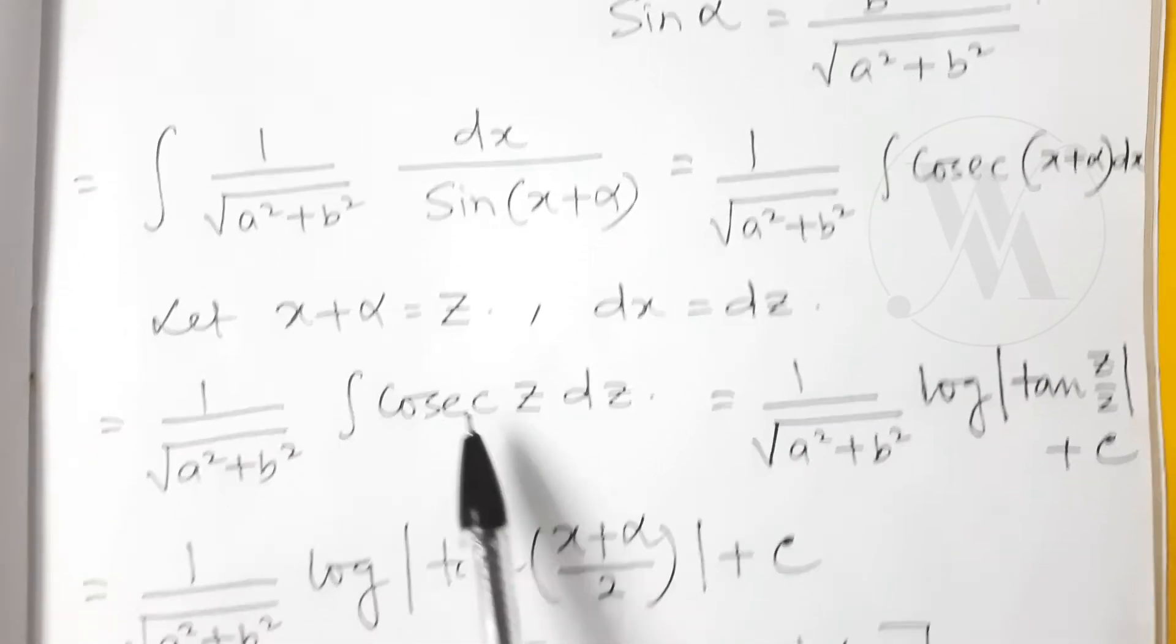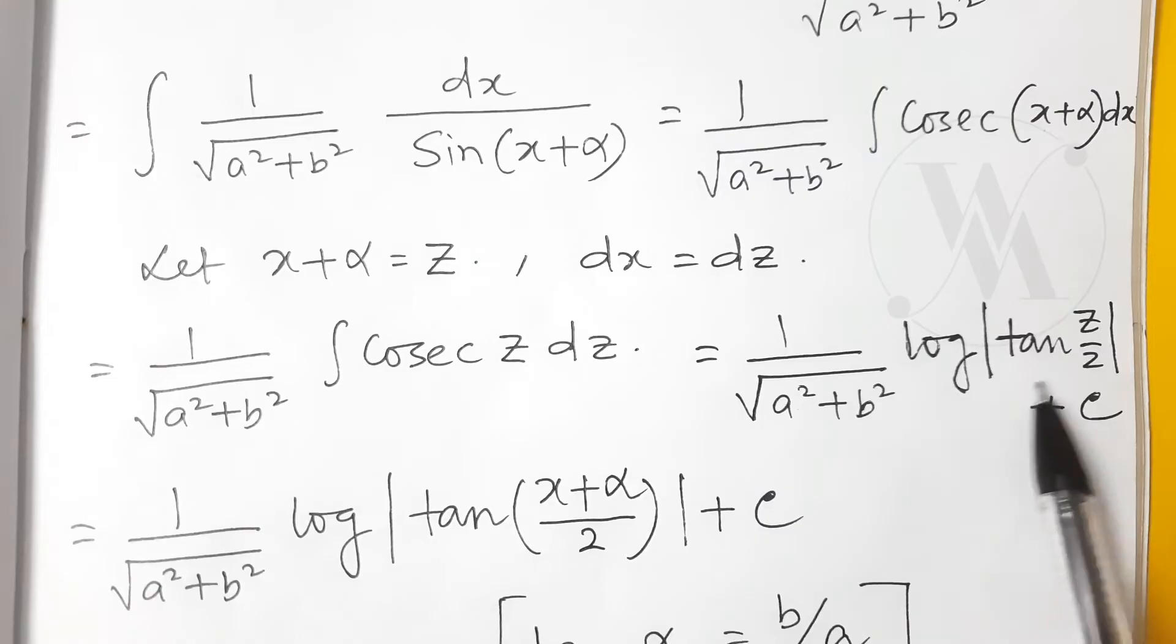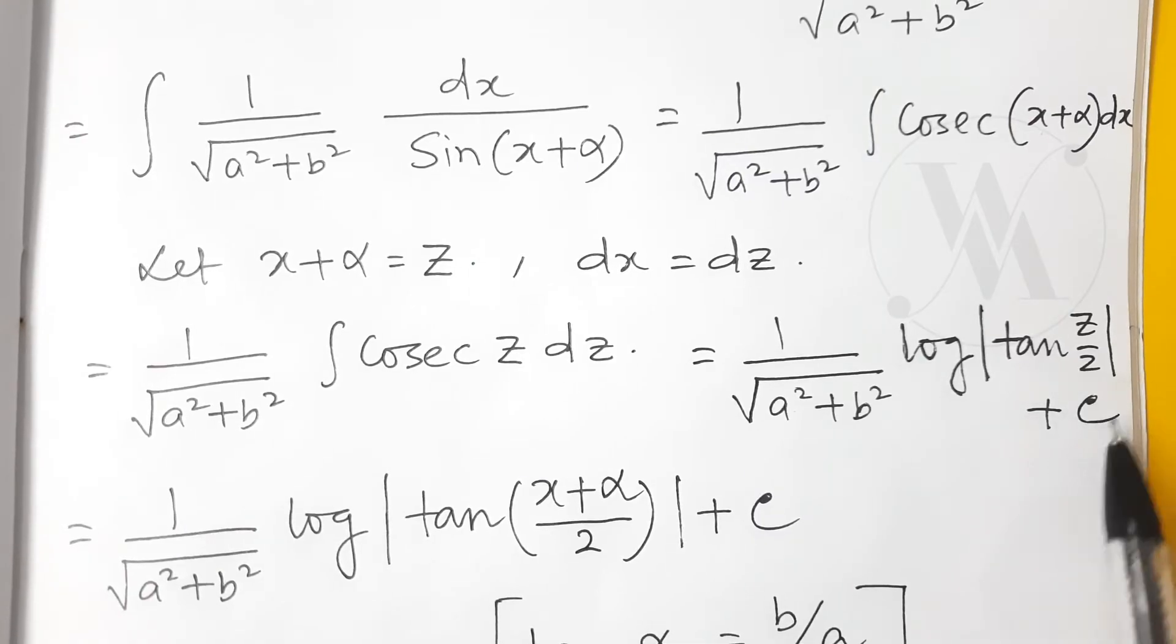Now this is nothing but integration of cosec z, so that is log of tan z by 2, and plus C will be there.